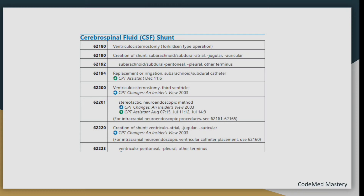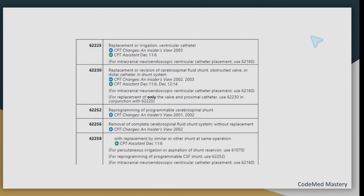Next is cerebrospinal fluid (CSF) shunt. The important codes are 62190 for creation of shunt - subarachnoid, subdural, atrial, jugular, or auricular. Code 62192 is for subarachnoid, subdural, peritoneal, or pleural terminals. Code 62194 is for replacement or irrigation of subarachnoid or subdural catheter. Code 62230 is for replacement or revision of CSF shunt. Code 62256 is for removal of complete CSF shunt system without replacement, and 62258 is for removal of complete cerebrospinal fluid shunt system with replacement by similar or other shunt at the same operation.